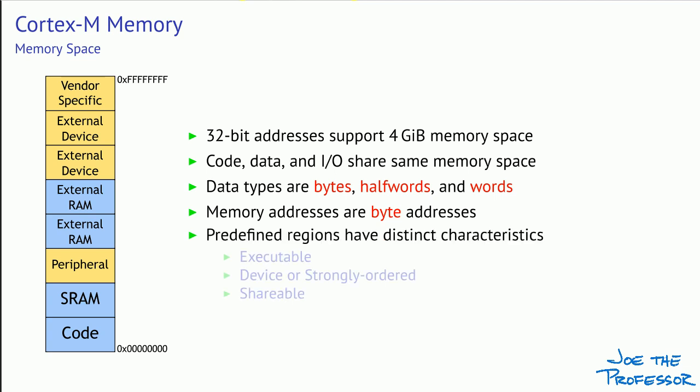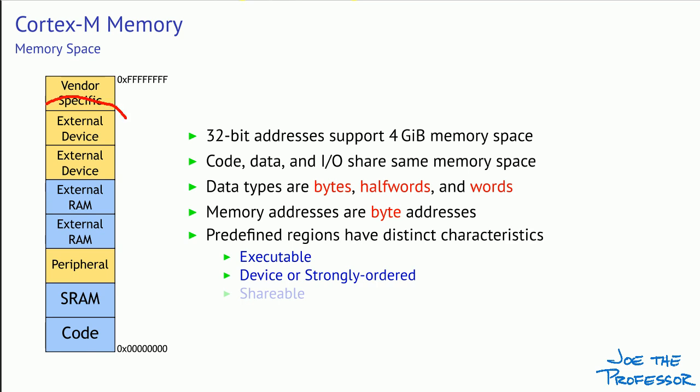There are predefined regions within the memory map as specified by ARM, and those regions have different distinct characteristics. For example, some of the regions — the ones marked in blue in this diagram — are considered executable, meaning you can execute instructions in that address space. Trying to execute an instruction that's not in one of the executable spaces will cause a fault condition. Some spaces are considered device spaces or strongly ordered spaces, which means accesses to different addresses in those spaces must occur in the same sequence specified in the code. An advanced processor may reorder memory accesses, and we don't allow that when the memory space is occupied by a hardware interface.